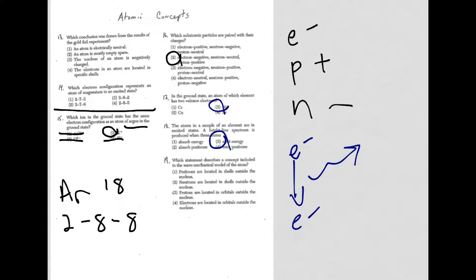And finally, for 19, which statement describes a concept included in the wave mechanical model? That is our present-day model of the atom. And what we say is that electrons are found in orbitals, obviously outside of the nucleus. That is choice four.